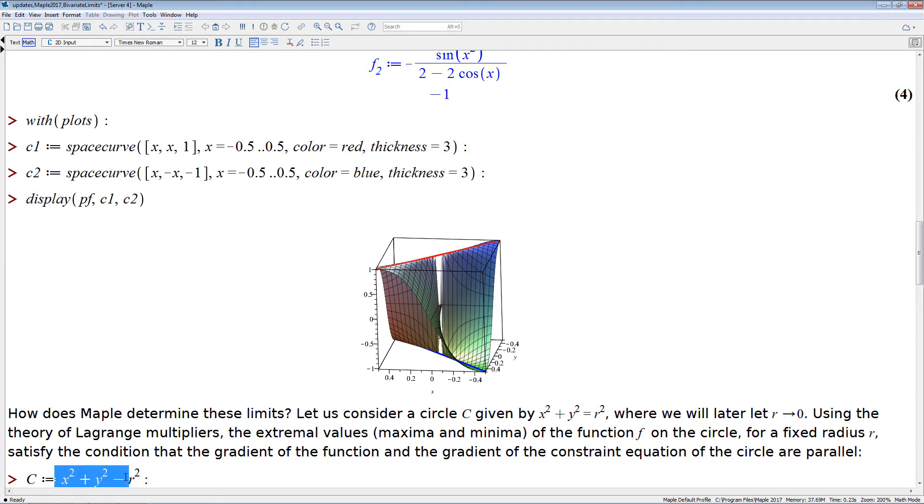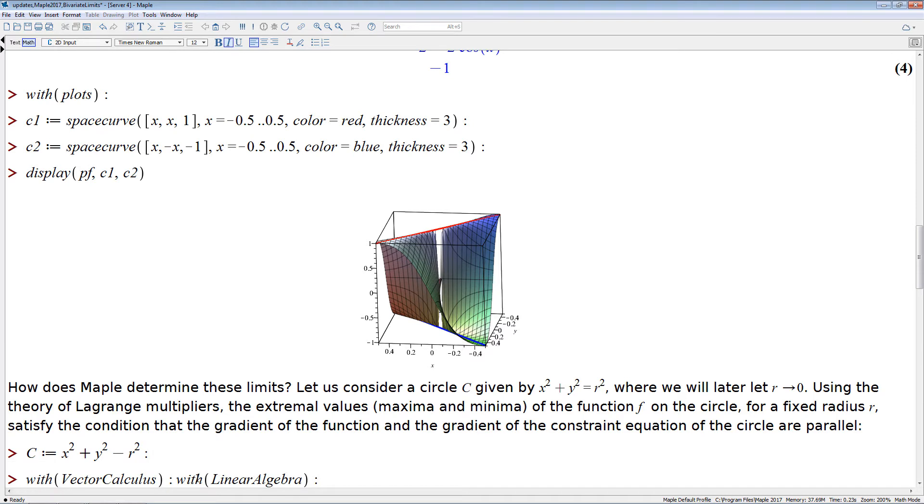And conceptually we will let the radius go to zero so that we approach the origin more and more closely. Now there's a well-known theory of Lagrange multipliers from constraint optimization. And it says that the maximum values of the function f on such a circle for a fixed radius r satisfies a certain condition, namely the condition that the gradient of the function f, or g in our case, and the gradient of the constraint have to be parallel.